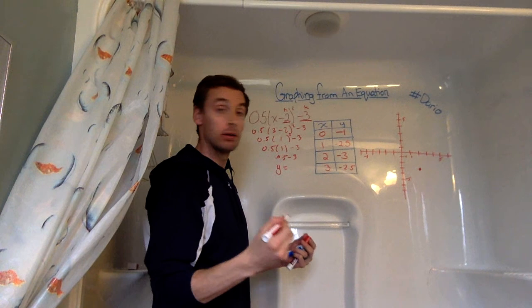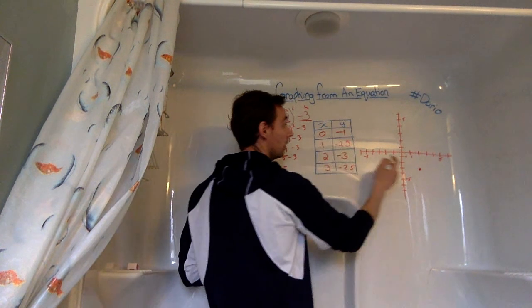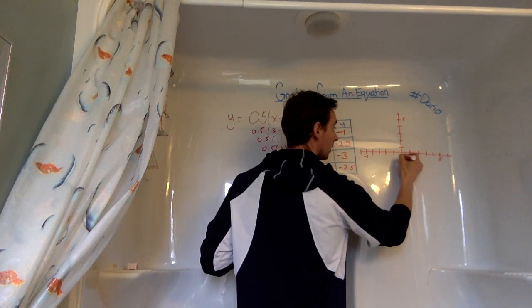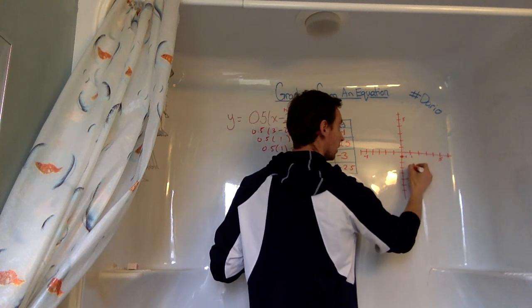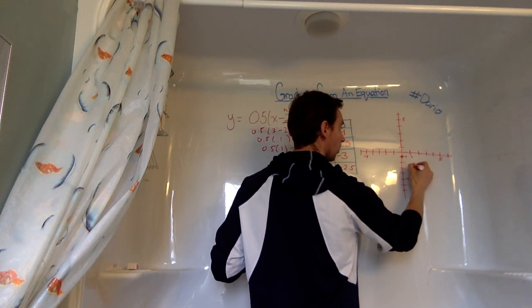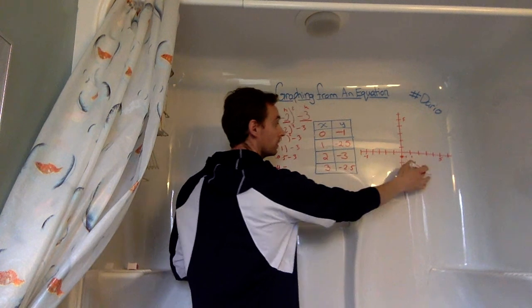So we have 0, negative 1. So 0, negative 1. We have 1, negative 2.5. So 1, negative 2.5. Our vertex, which we have, 3, negative 2.5.